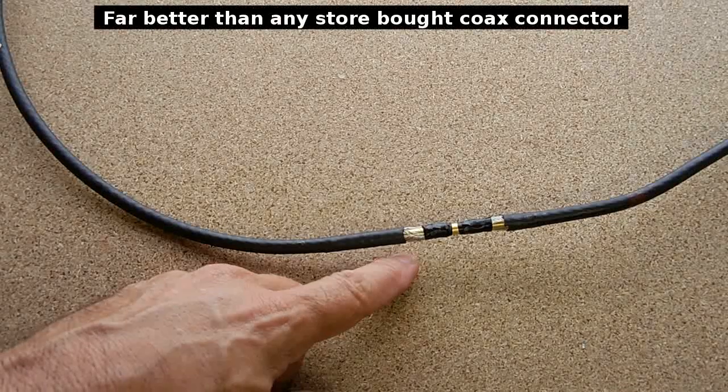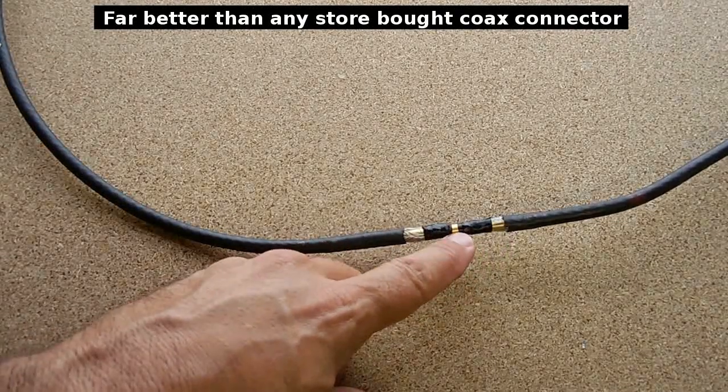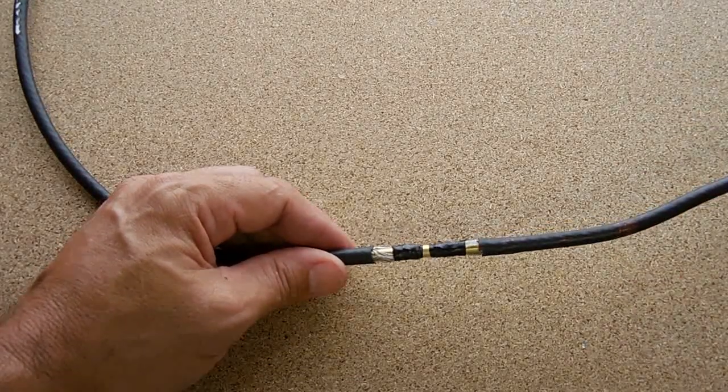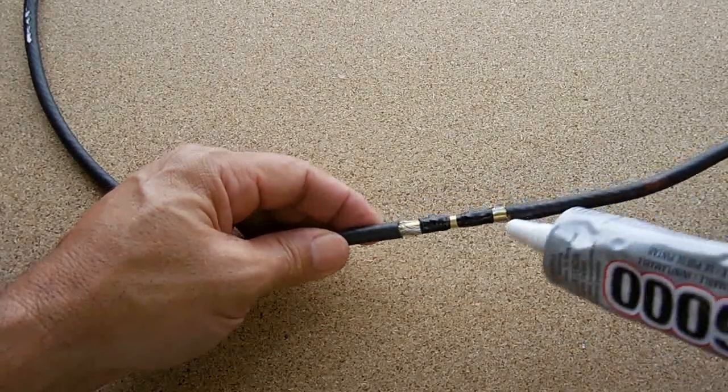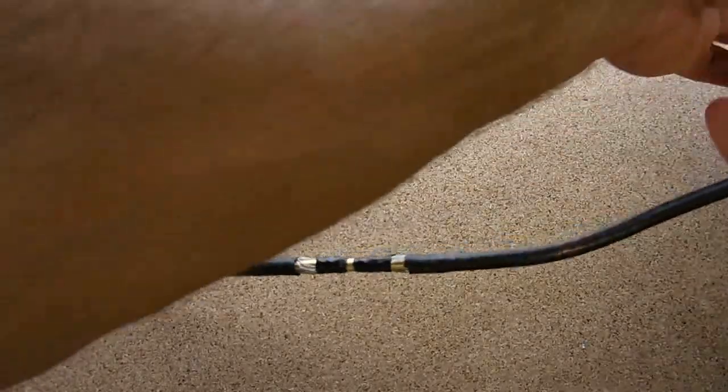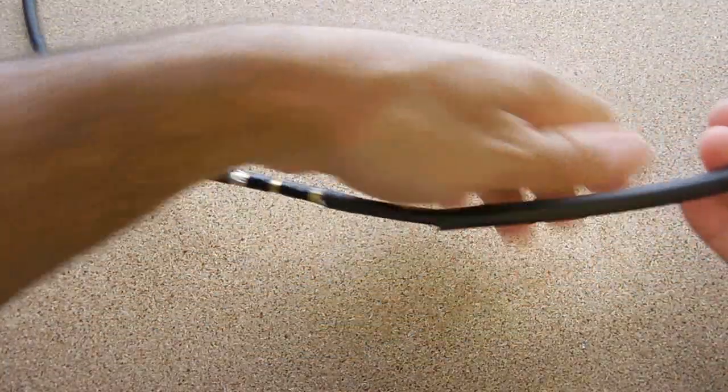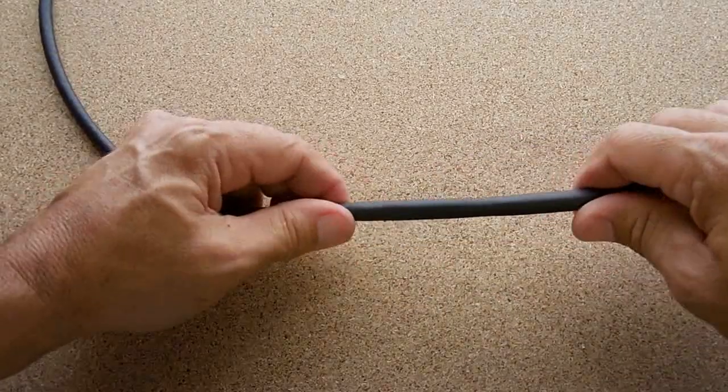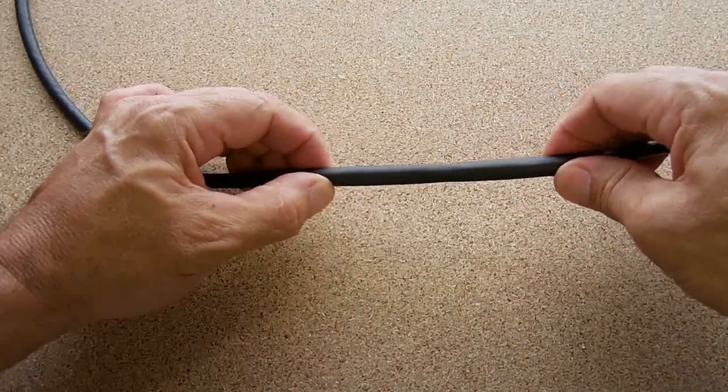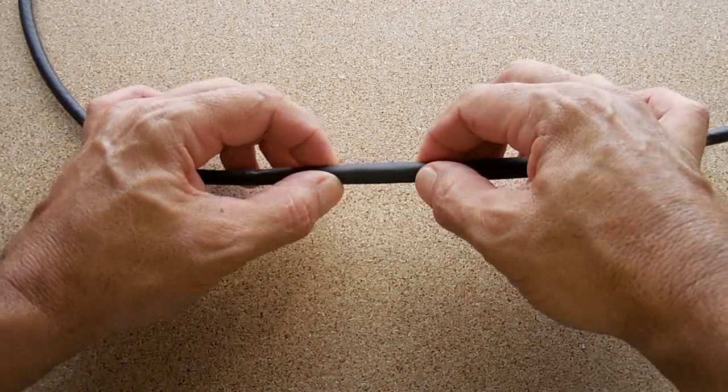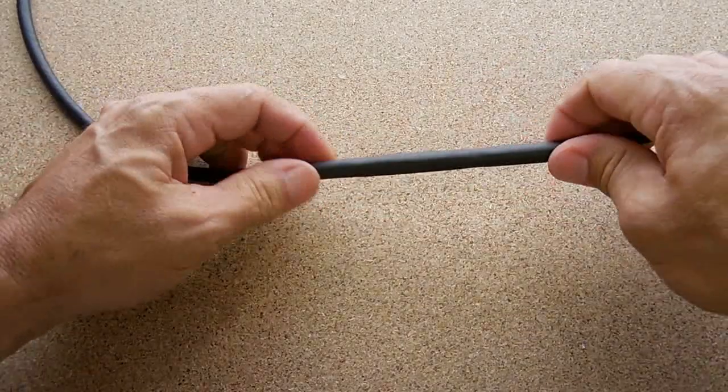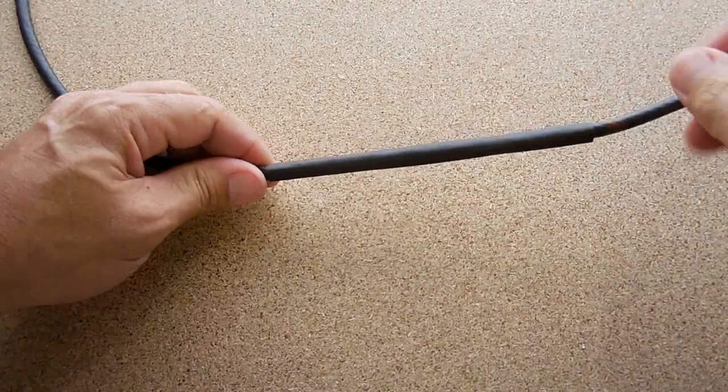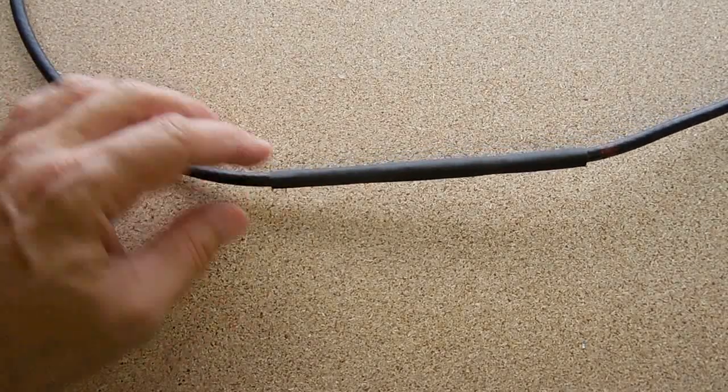The center conductor is back together, isolated from the outside shielding. The shielding is all back together. Now you're going to slide your heat shrink tubing with the glue. Make sure it has glue. If you don't have glue, you better put some glue all over this section before you put the heat shrink tubing over it. I'm going to slide mine directly over it. Make sure you feel the repair area. The repair area is right there, so I've got to slide it down more. That's perfect.